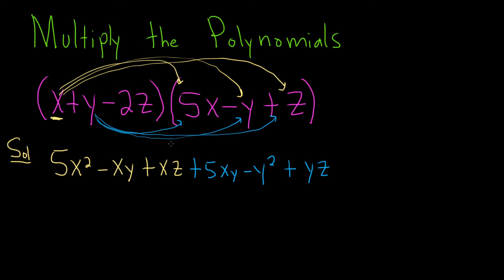Pretty intense problem. And the very last part is going to be just distributing the negative 2z. So let's see, negative 2z times 5x will give us a negative 10zx. And then negative 2z and negative y is going to be a positive 2zy, right? Because it's a double negative. And then negative 2z times z will be negative 2z squared.